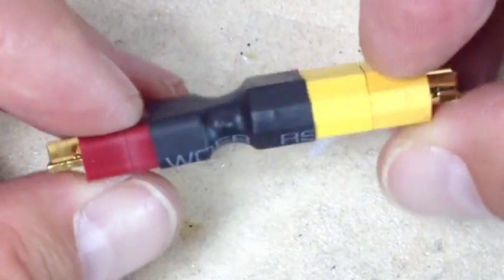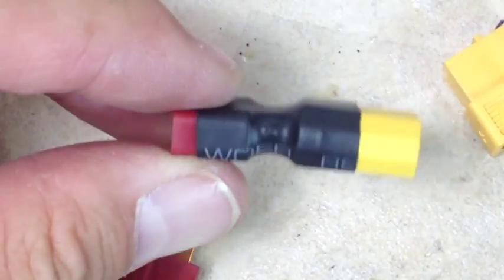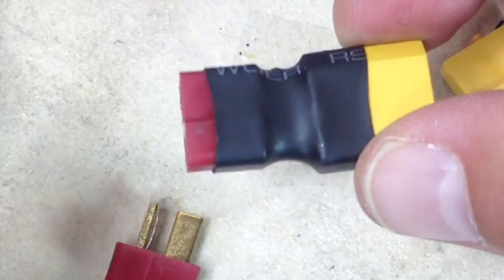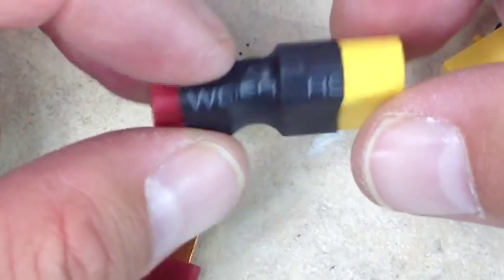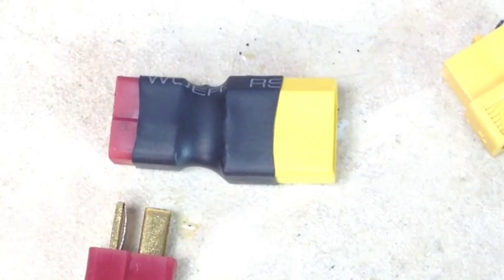All right guys, here is the finished product with the other ends plugged in. Like I said, if you need to adapt any type of Dean's connector to your XT-60s, this is how to do it in the most efficient manner without the least amount of weight and the least amount of work. So I will talk to you guys later. See you on the next video.